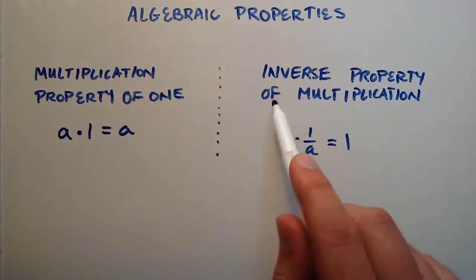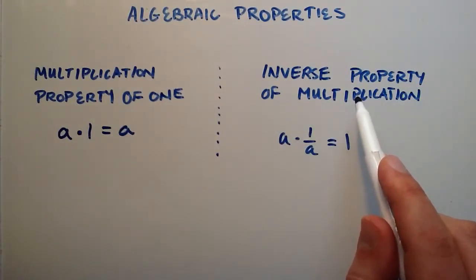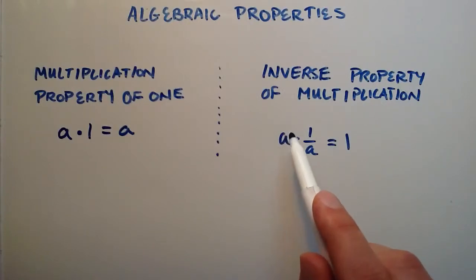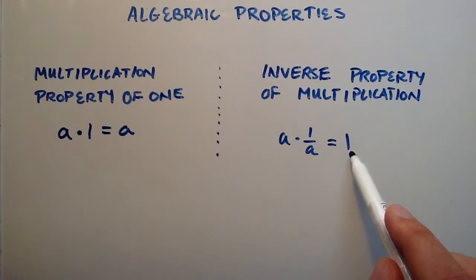So the inverse property of multiplication is the other one. And it says that if we have any number a, and we multiply that by 1 over a, then the result of that is simply equal to 1.